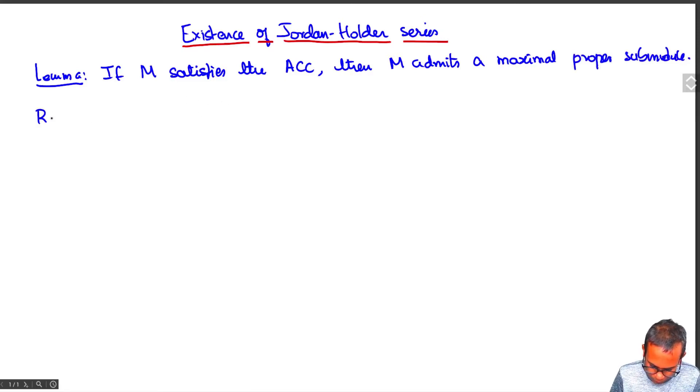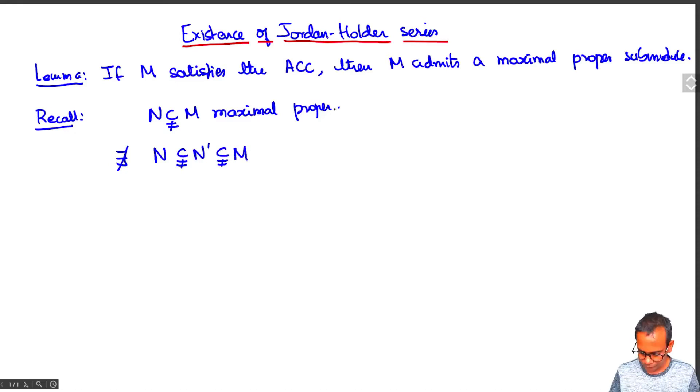Recall that a maximal proper submodule means firstly that it's proper, and secondly that there does not exist any N prime between N and M. But this is the same as saying that M mod N is simple, because the submodules of M that contain N are in bijection with submodules of M mod N.